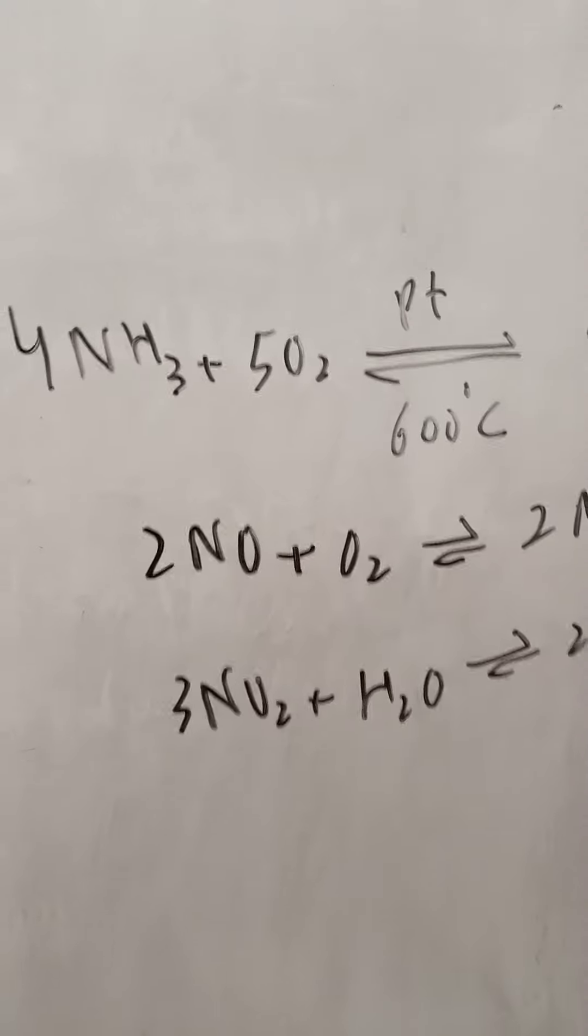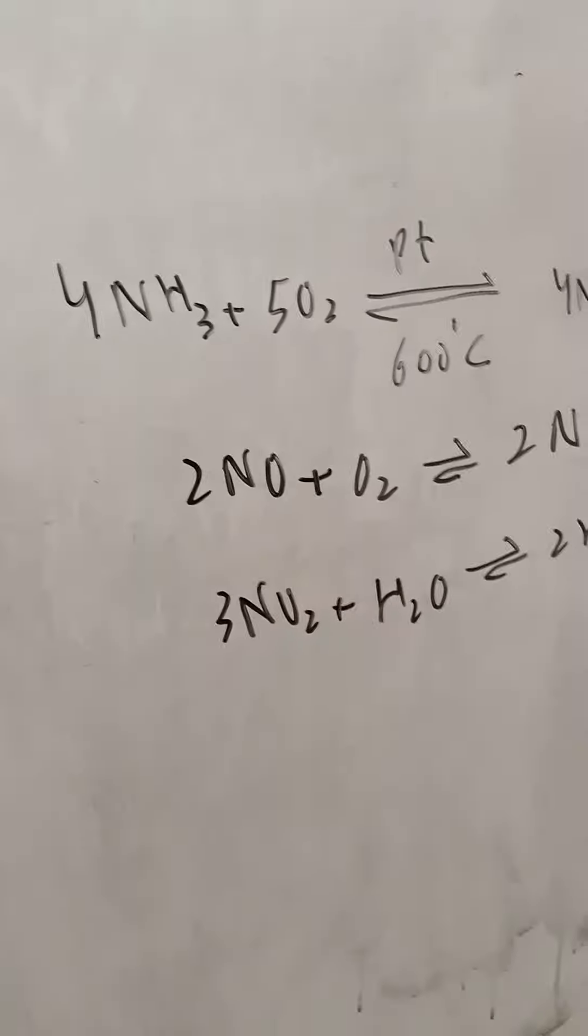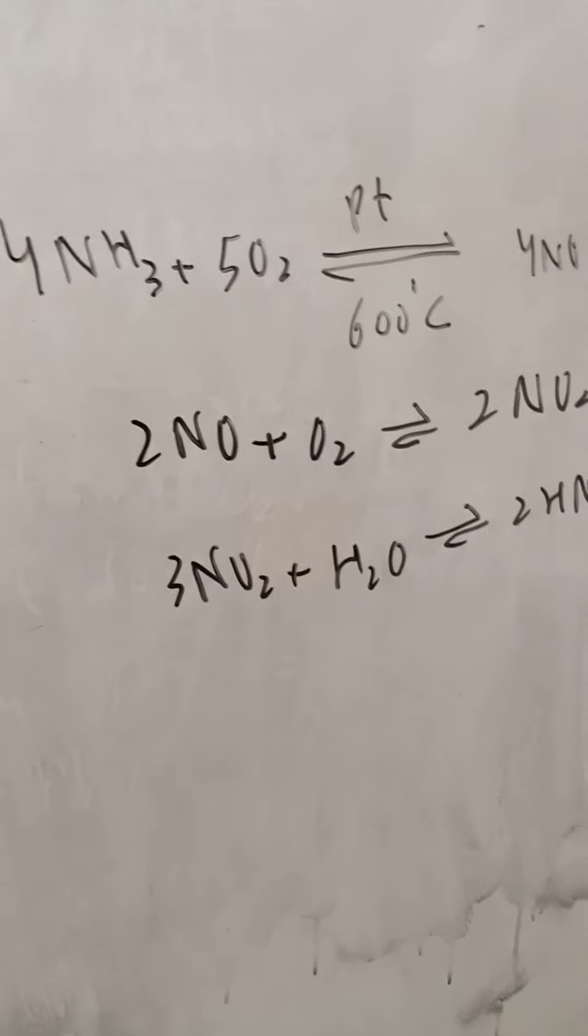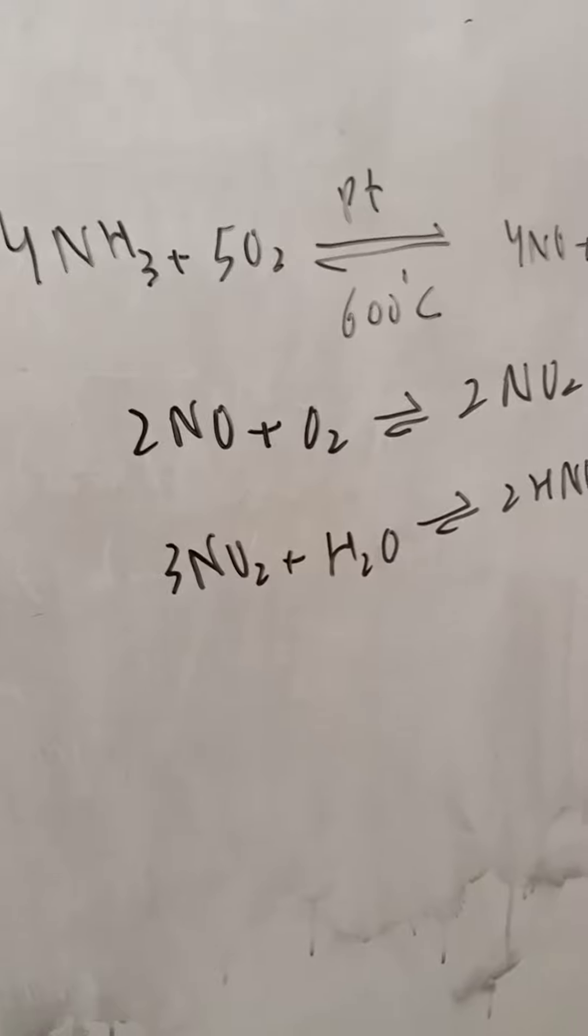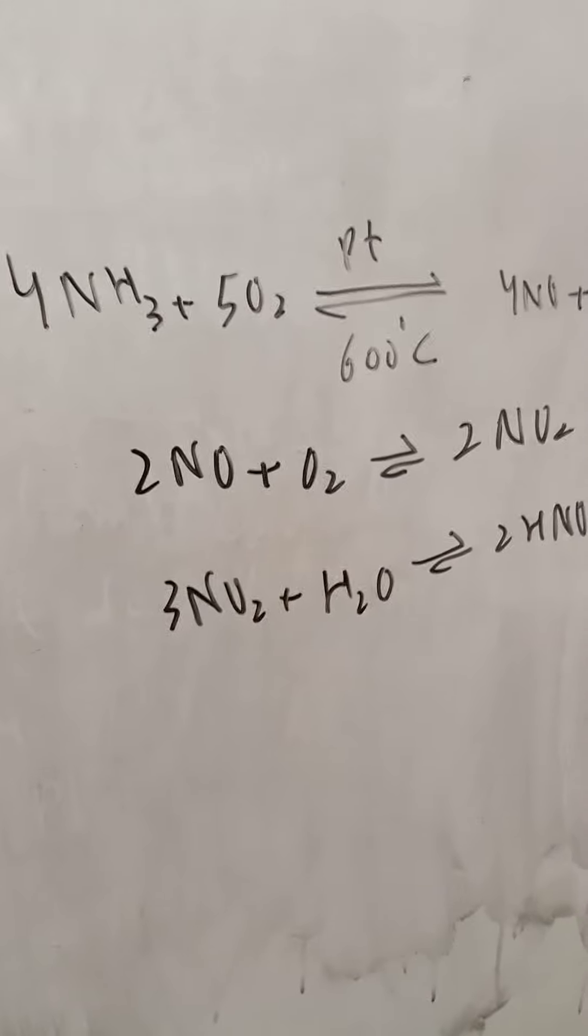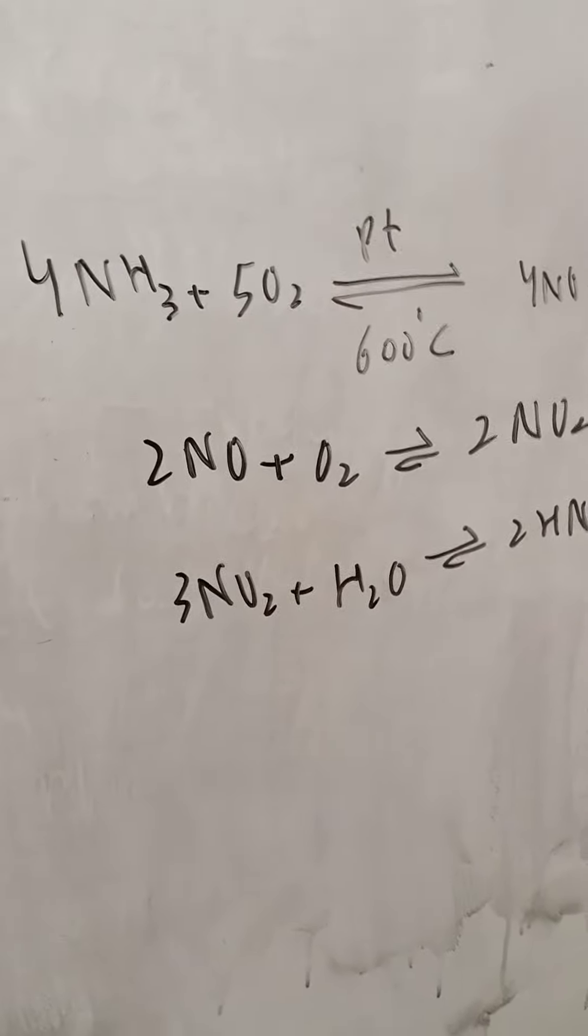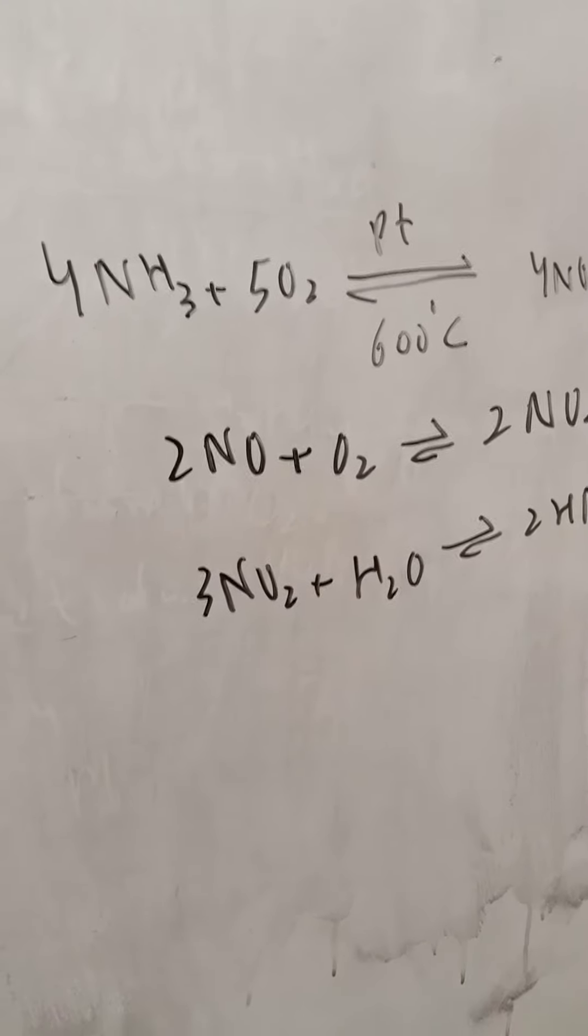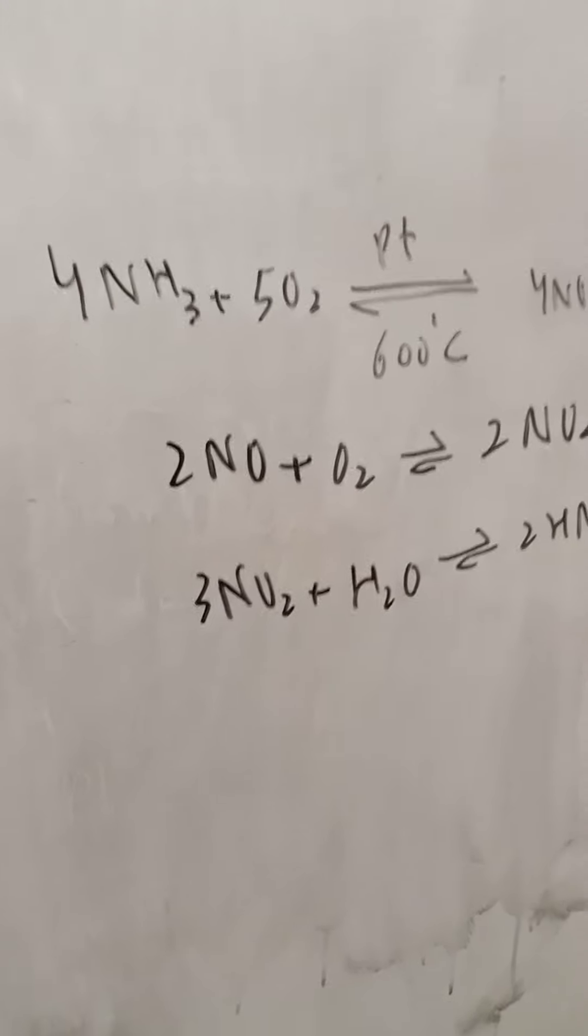Ammonia is 4 moles, oxygen is 5 moles. But what is the answer to the moles? What is the answer to this step? The first step is the volume ratio. Ammonia and air ratio is 1 to 8.